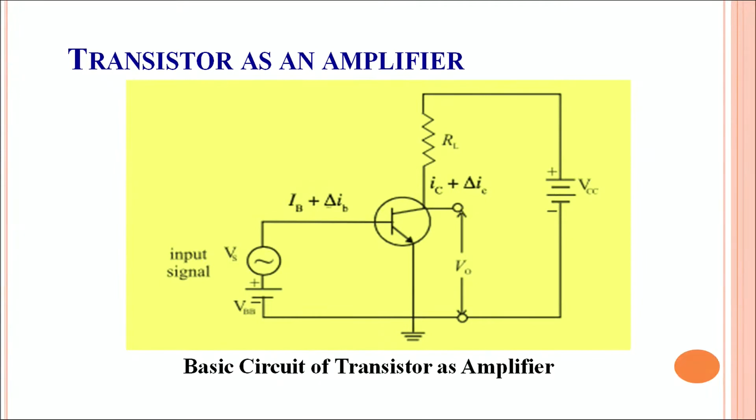Now what happens is in the forward bias it allows the base current to flow through this. So apart from IB there's a small amount of current from the input signal which also passes through the input circuit. Now in the output circuit we take the output voltage is measured across the load resistance.